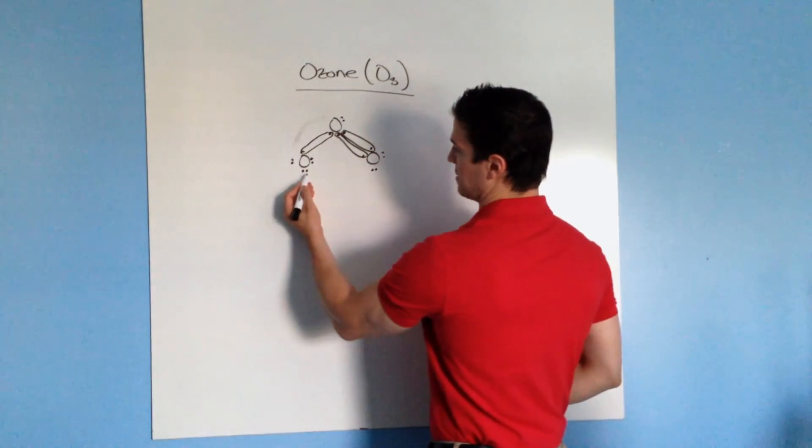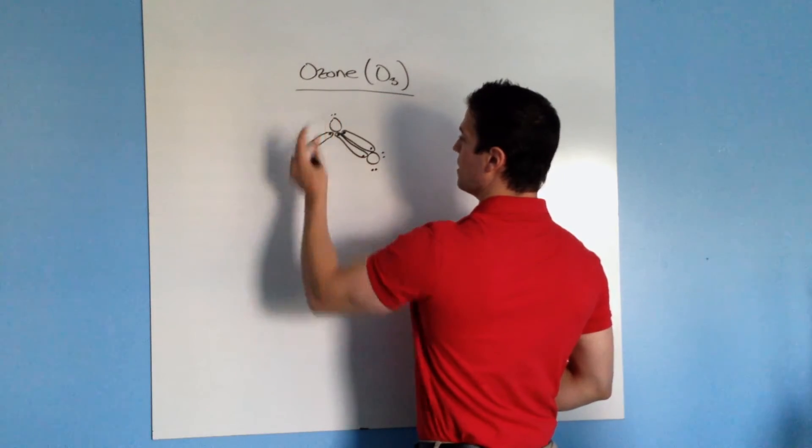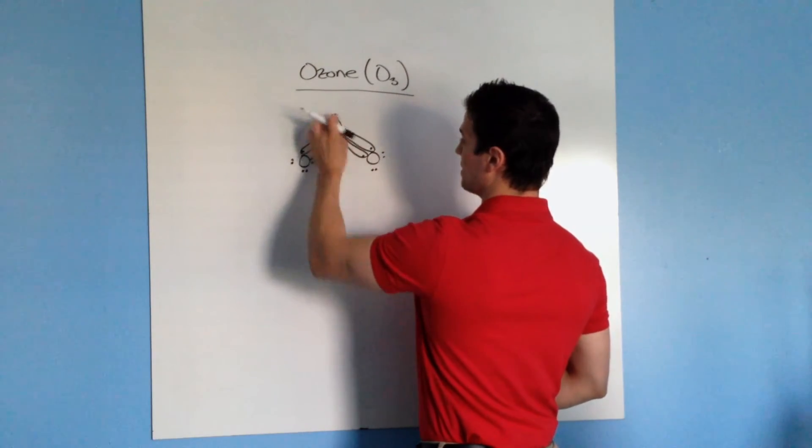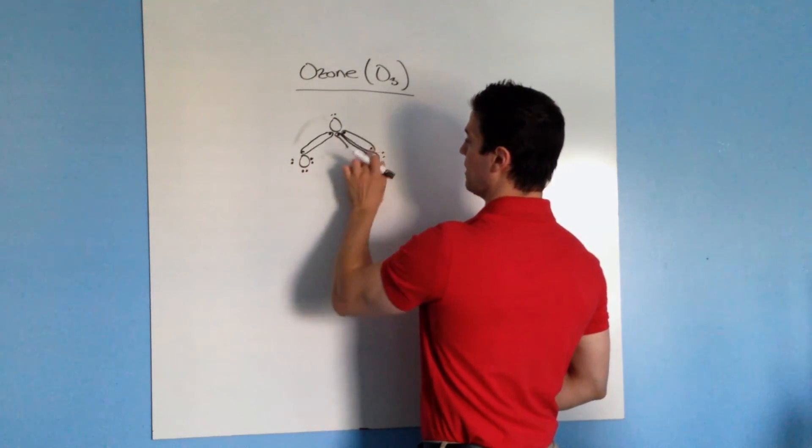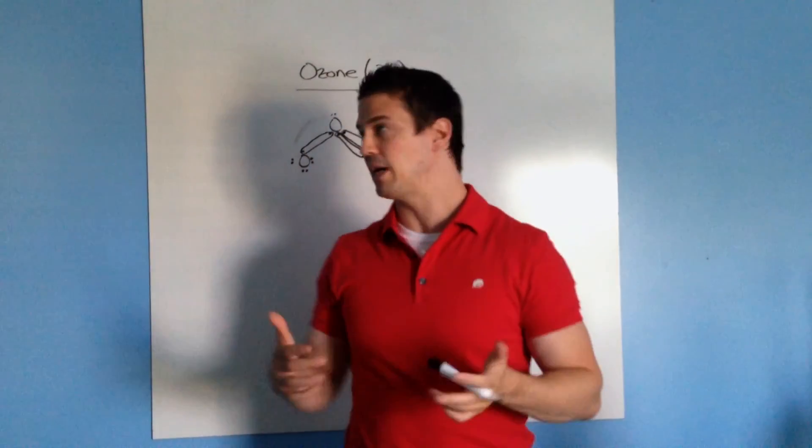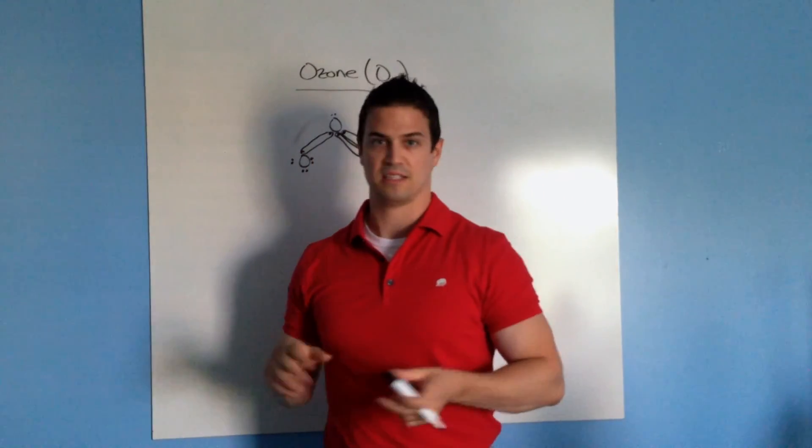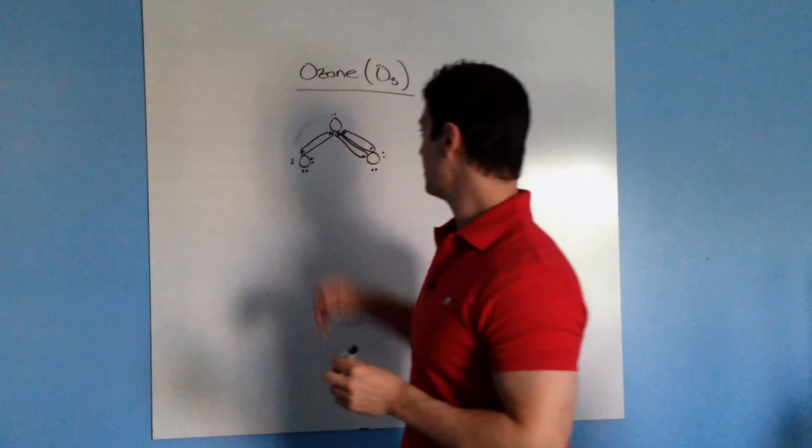If you notice, this one has eight electrons, this center one has one, two, three, four, five, six, seven, eight, and this one here one, two, three, four, five, six, seven, eight. So it is stable even though compared to basically the octet rule, but compared to O2 it's not very stable at all and this doesn't last very long.